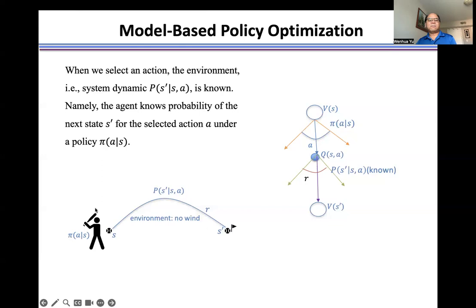For example, when under the policy pi we select A, hit a baseball, starting from state S, if the environment is known, the MDP is known, so we will know exactly what's the destination point.